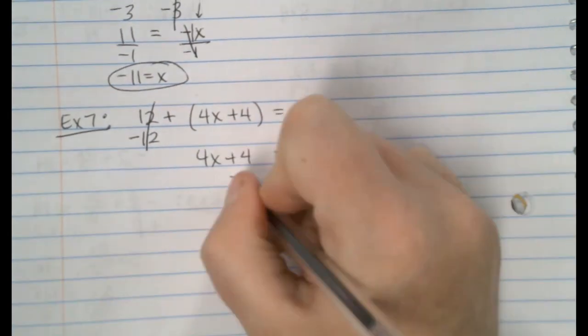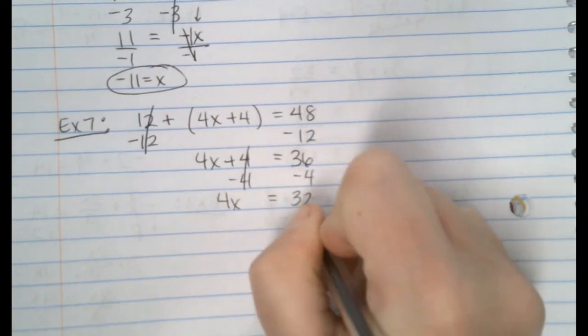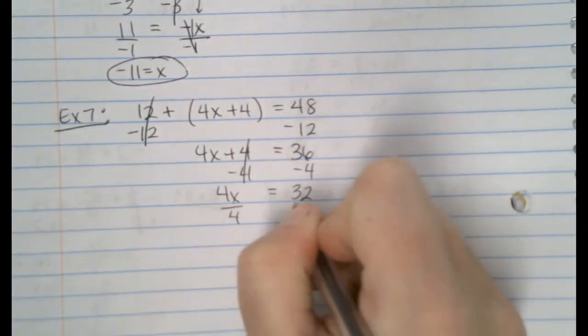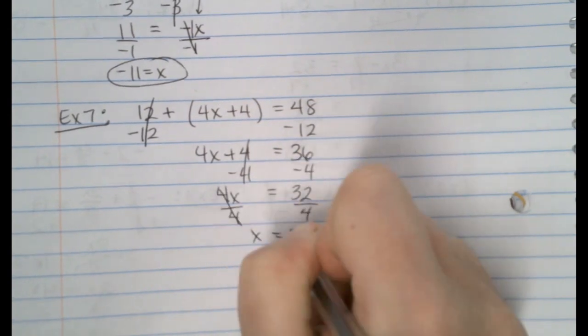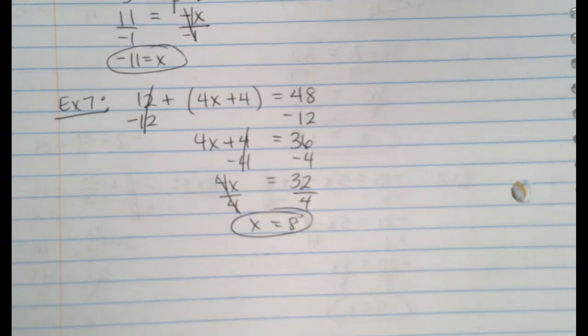And then we're going to subtract 4. That gives us 32. And then divide by 4. And that gives us 8. Did we get it? Those of you who attempted it? Yay? Nay? Yay? No? Do you know what you did wrong?